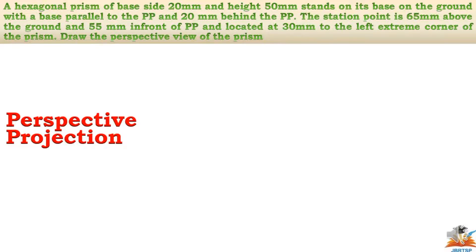We are going to see a perspective projection of a hexagonal prism. A hexagonal prism of base height 20mm and height of 50mm stands on its base on the ground, with the base parallel to the picture plane and 20mm behind the picture plane. The station point is 65mm above the ground, 55mm in front of the picture plane, and located 30mm to the left of the extreme corner of the prism. Draw the perspective view of the prism.